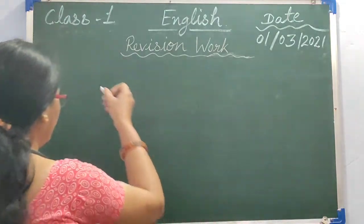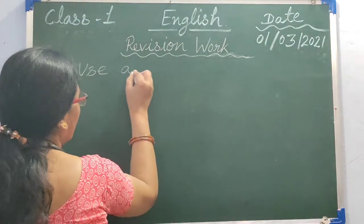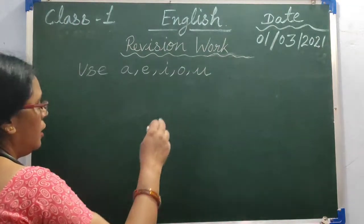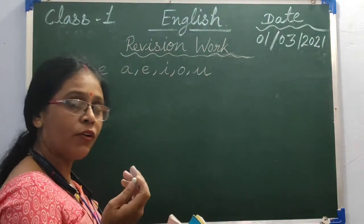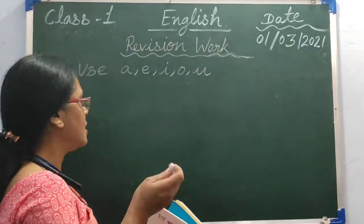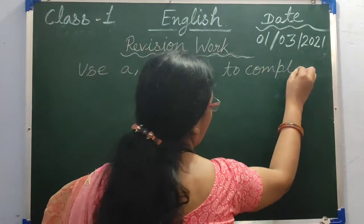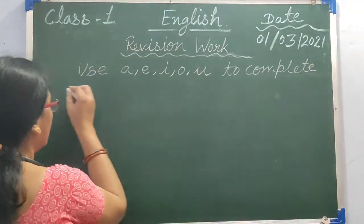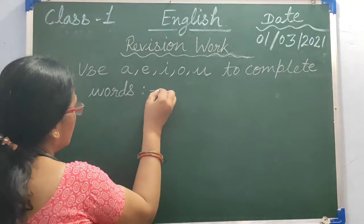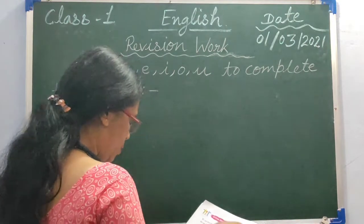So your work is: use A, E, I, O, U — all these are called vowels. Use A, E, I, O, U to complete the words.